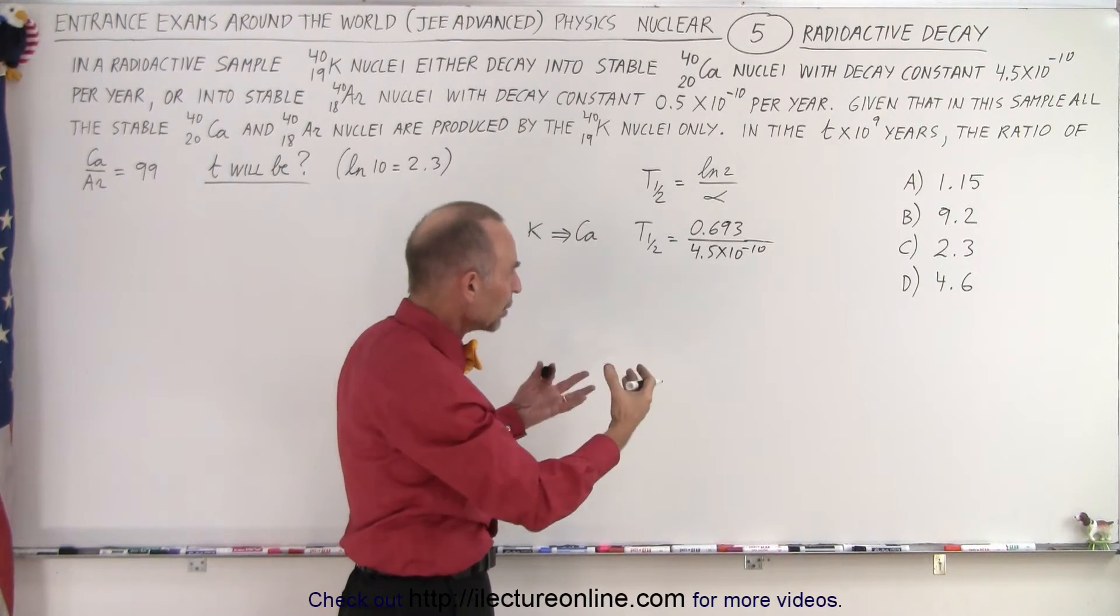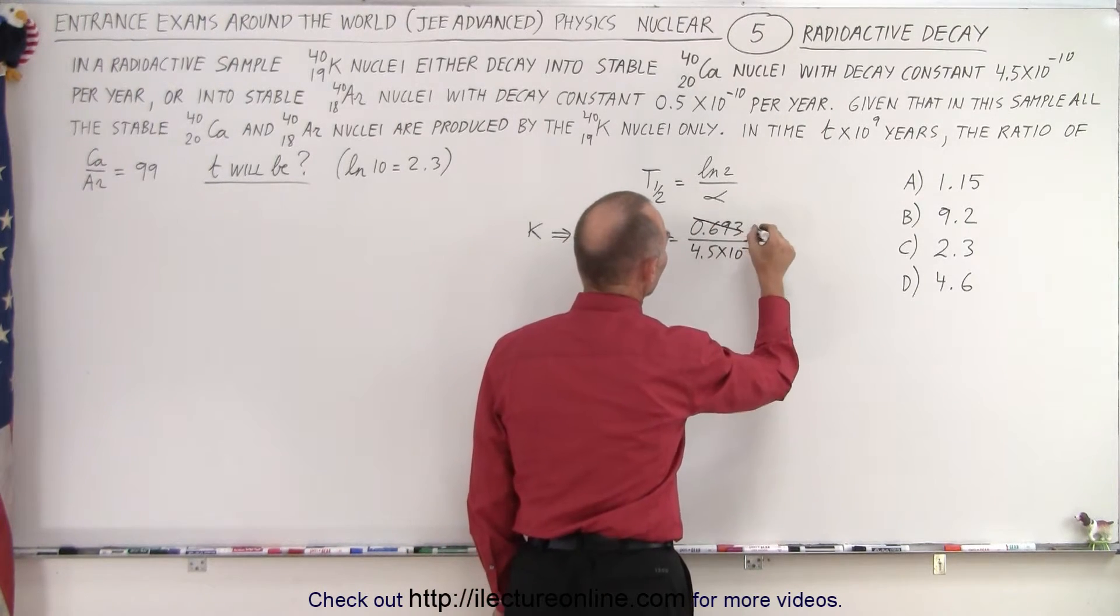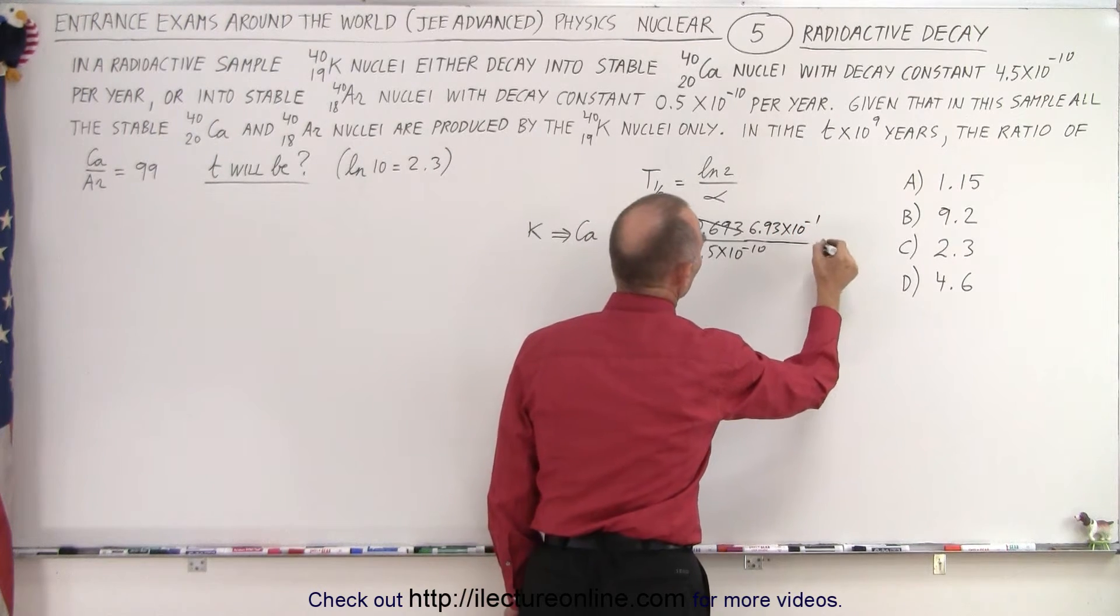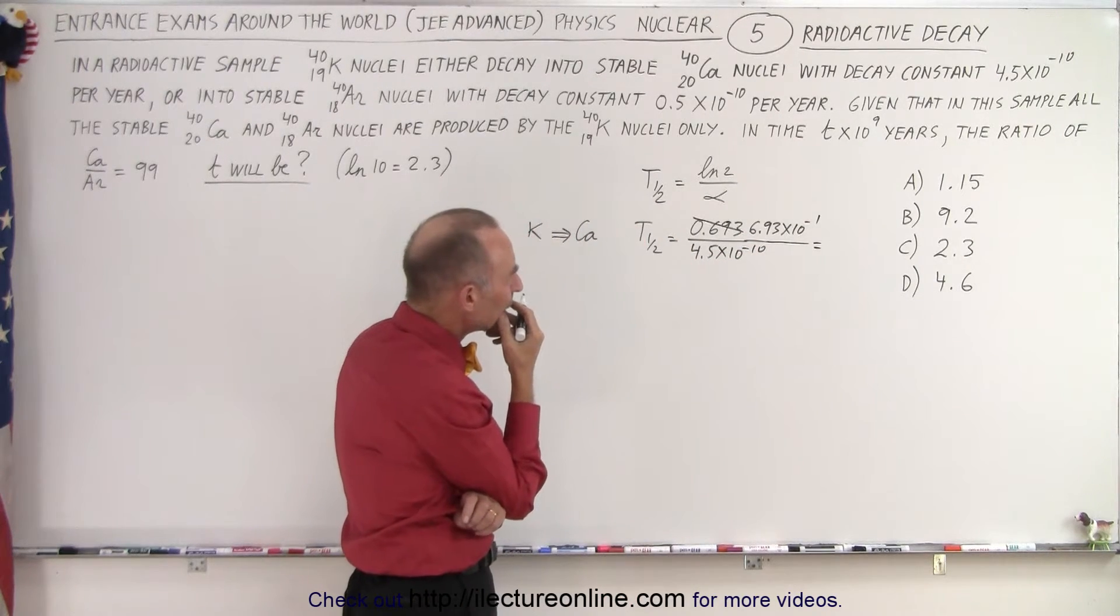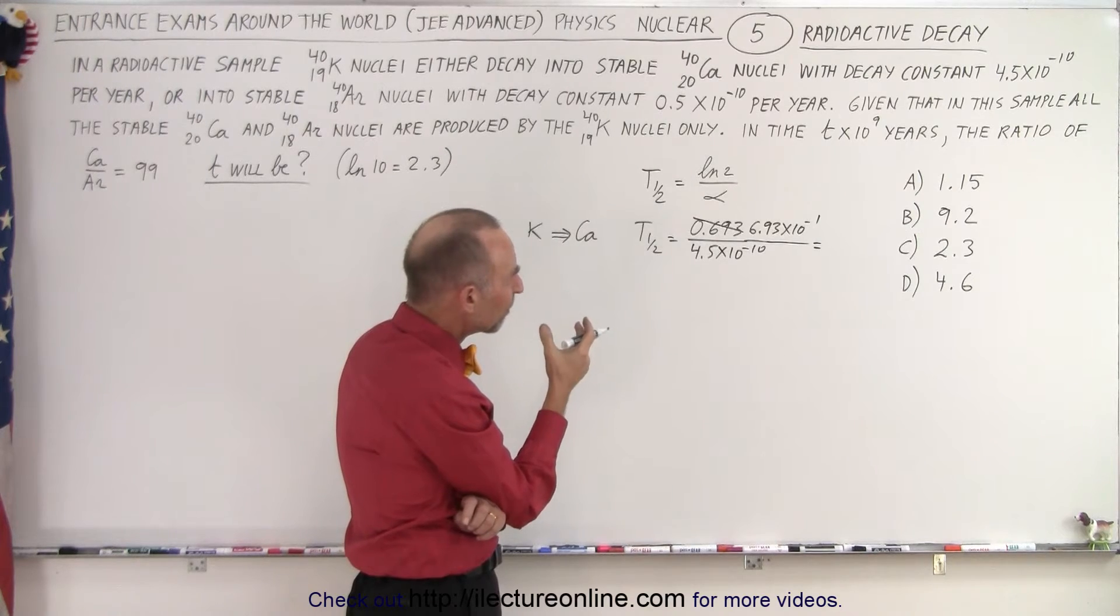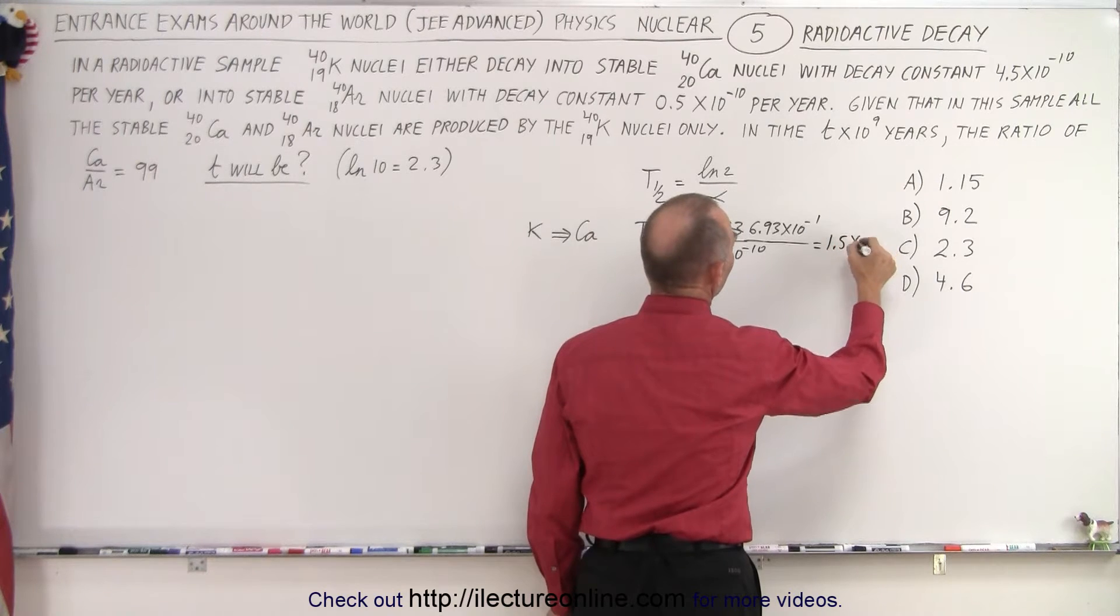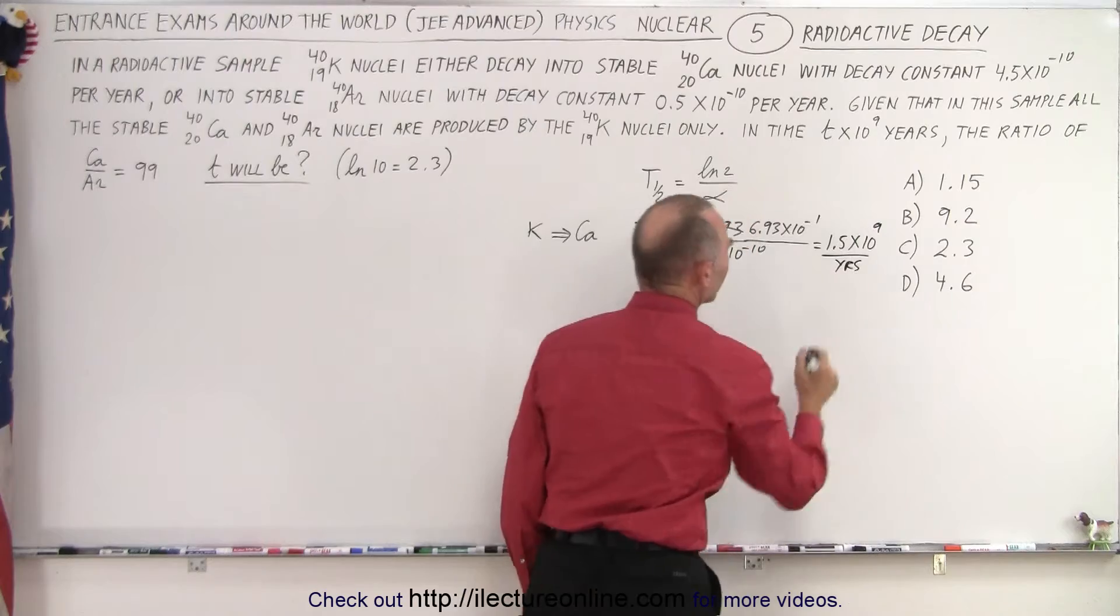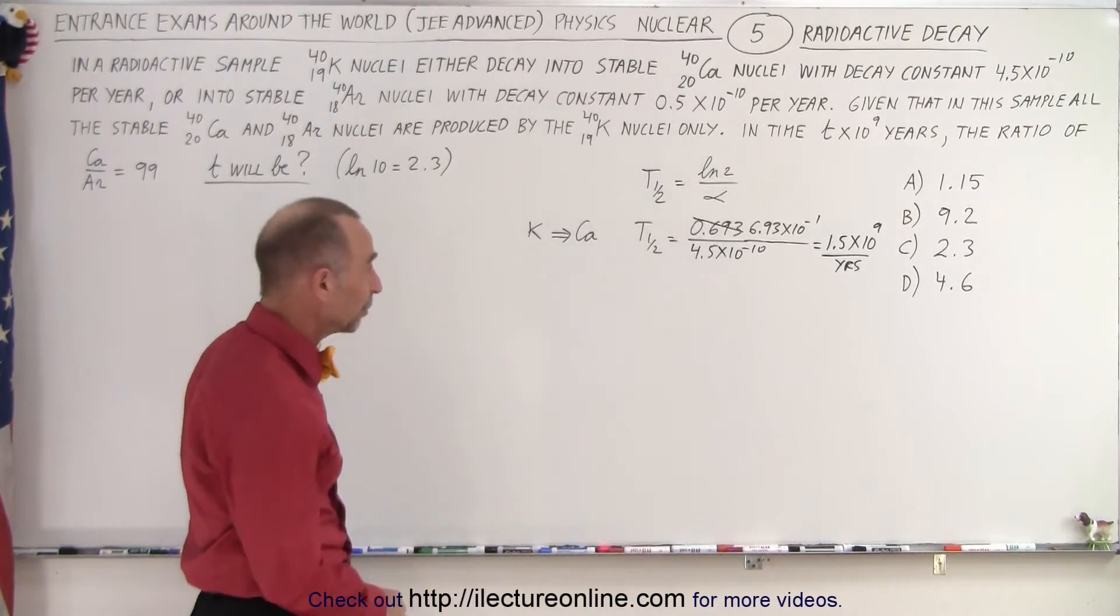So that will be in years. So the way to do that is to write this as 6.93 times 10 to the minus 1. So then when we calculate that, 4.5 goes into 6.93, that's about 1.5, 1.5 times 10 to the 9 years. Approximately, without the calculator you can kind of say it's about 1.5.